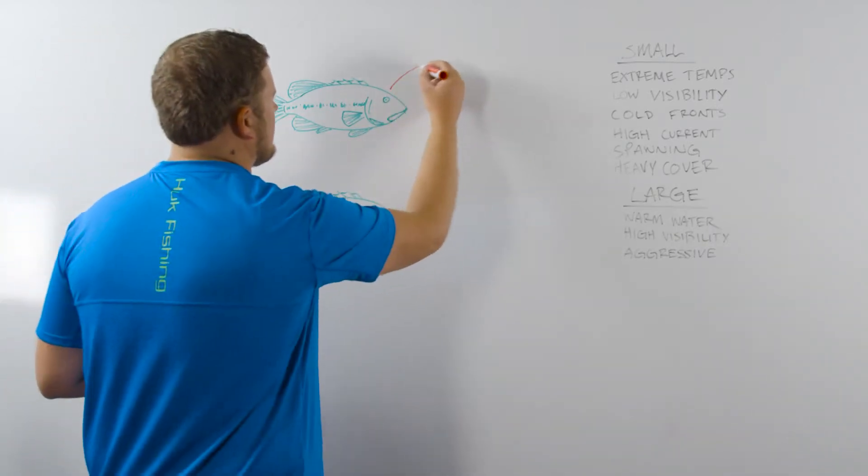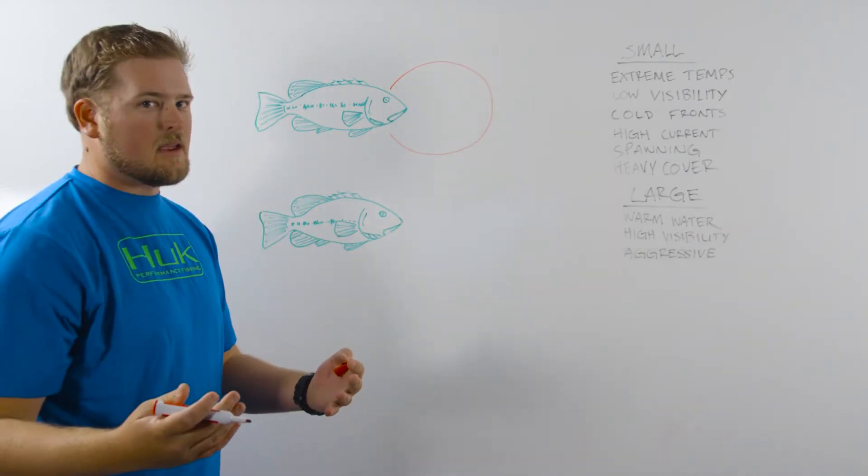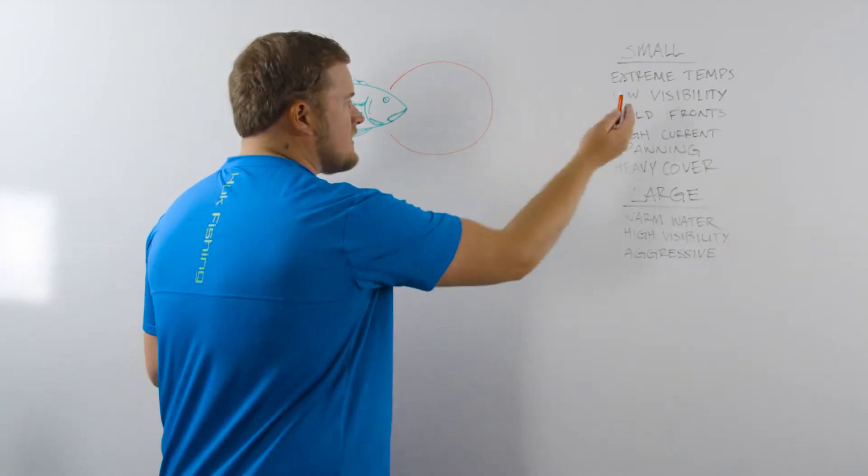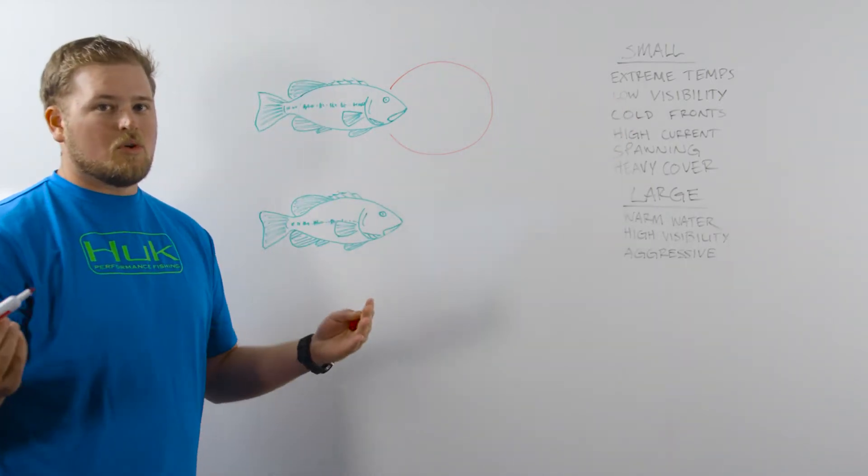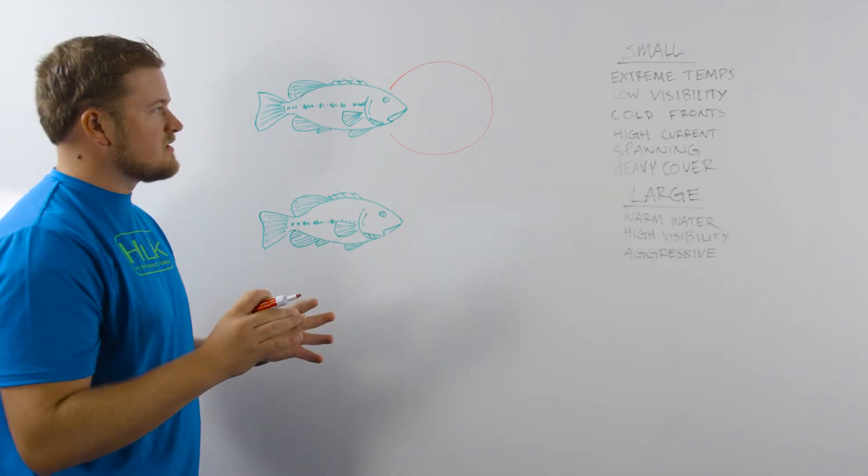So if you have a fish that's got a small strike zone, they're not willing to move very far to attack a bait. There's a lot of different reasons for that. It could be that there's extreme temperatures, whether it's cold or hot, it's just not the right range for them. They're not very aggressive because of that.